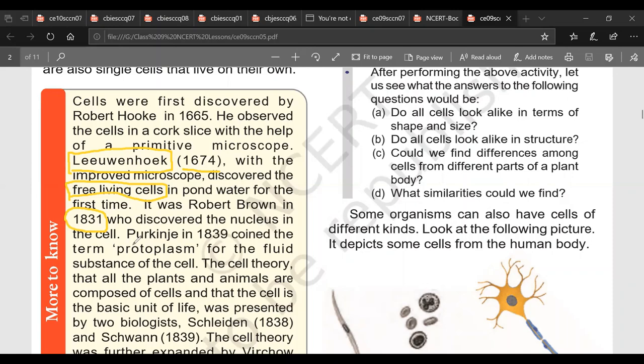Then was Purkinje. Purkinje coined the term protoplasm for the living substance of the cell. This is a cell membrane. Whatever is filled inside is protoplasm. This is basically cell plus cytoplasm plus nucleus is protoplasm. And after that comes the cell theory.